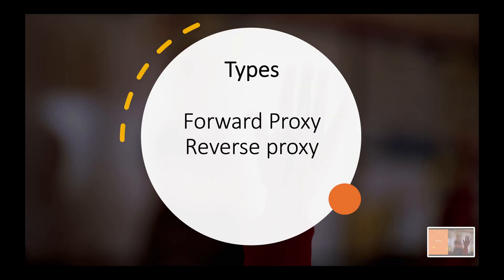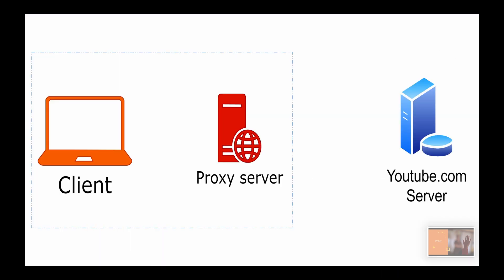So there are two types of proxy server: forward proxy and reverse proxy. Let's dive into detail to understand the difference between the two. The client on the left side is an end user who wants to access some content from YouTube. It sends a request to its proxy server, usually the internet service provider at times. It will take care of connecting to the YouTube server and getting the desired content back to the client on its behalf. The YouTube server has no idea about the end user who actually requested the information from it.